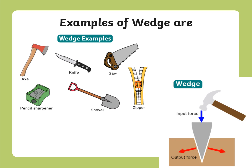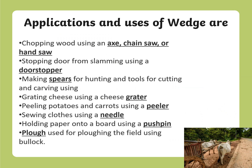Various examples of a wedge are an axe, knife, saw, pencil sharpener, shovel, and zipper. The input force is applied and the output force separates objects in two different directions. Applications of a wedge include chopping wood with an axe or handsaw, a door stopper, a spear used for hunting, a grater for grating cheese, a peeler to peel potatoes or carrots, a needle for sewing, a push pin for holding paper on a board, and a plow for plowing the field.